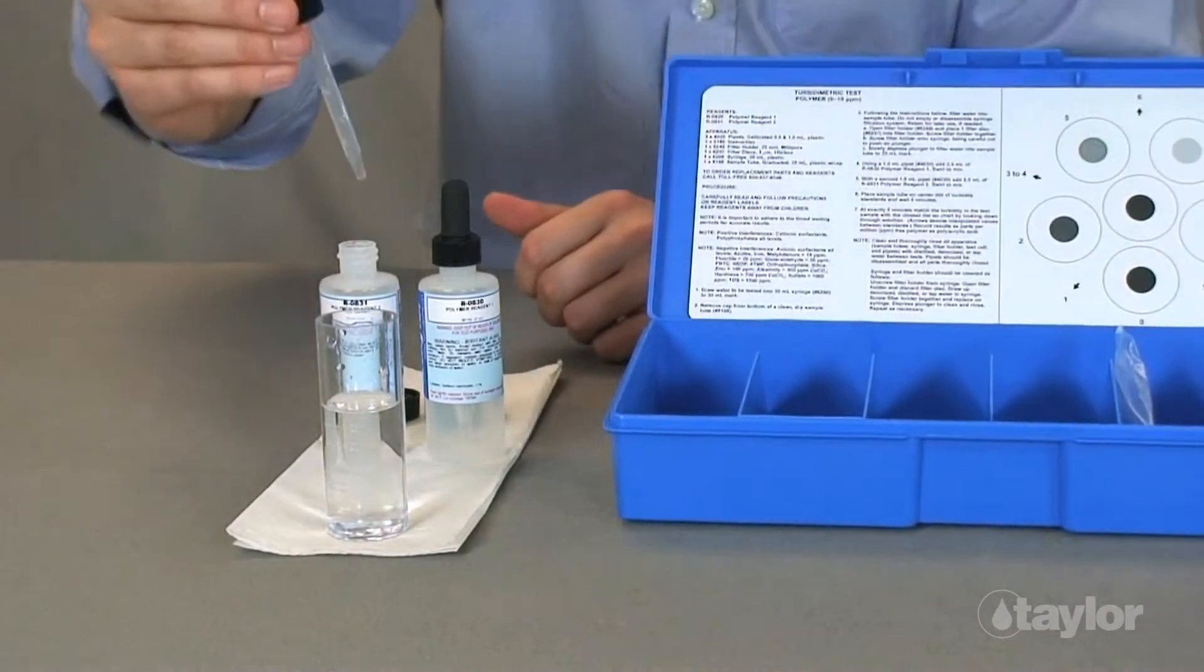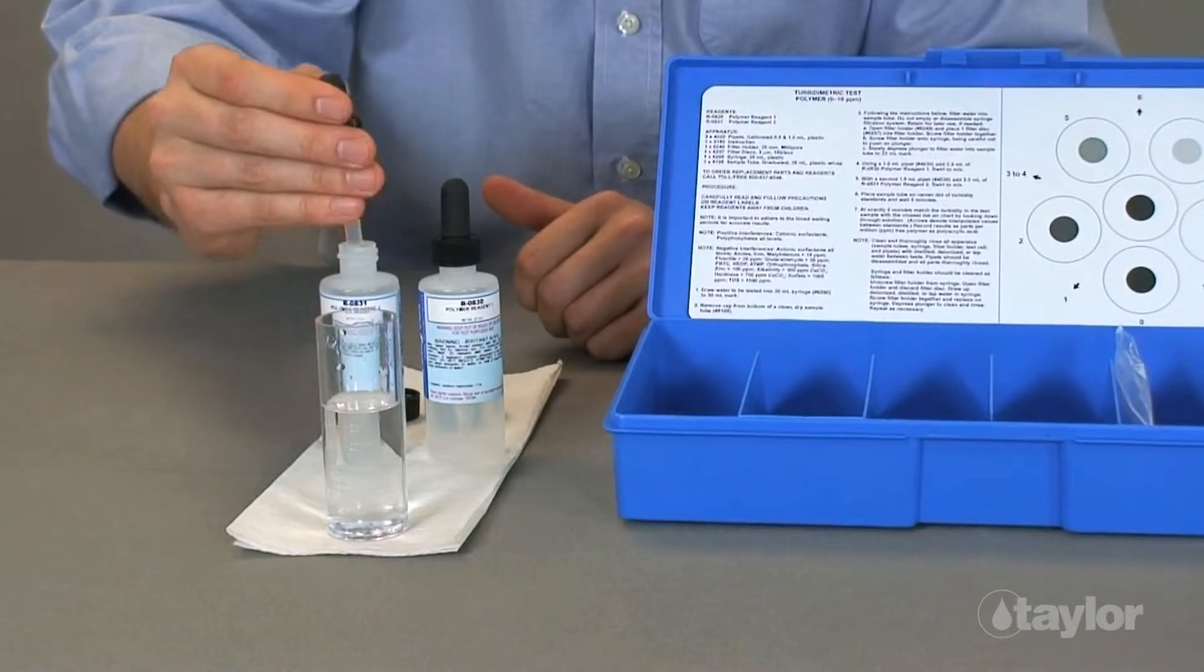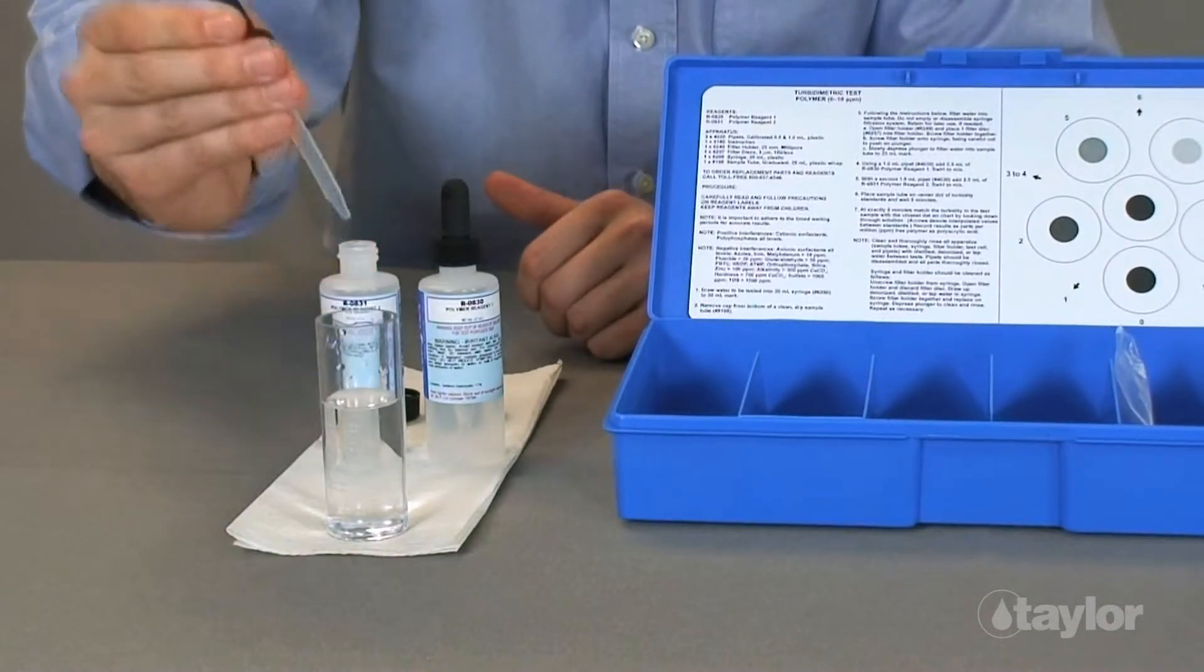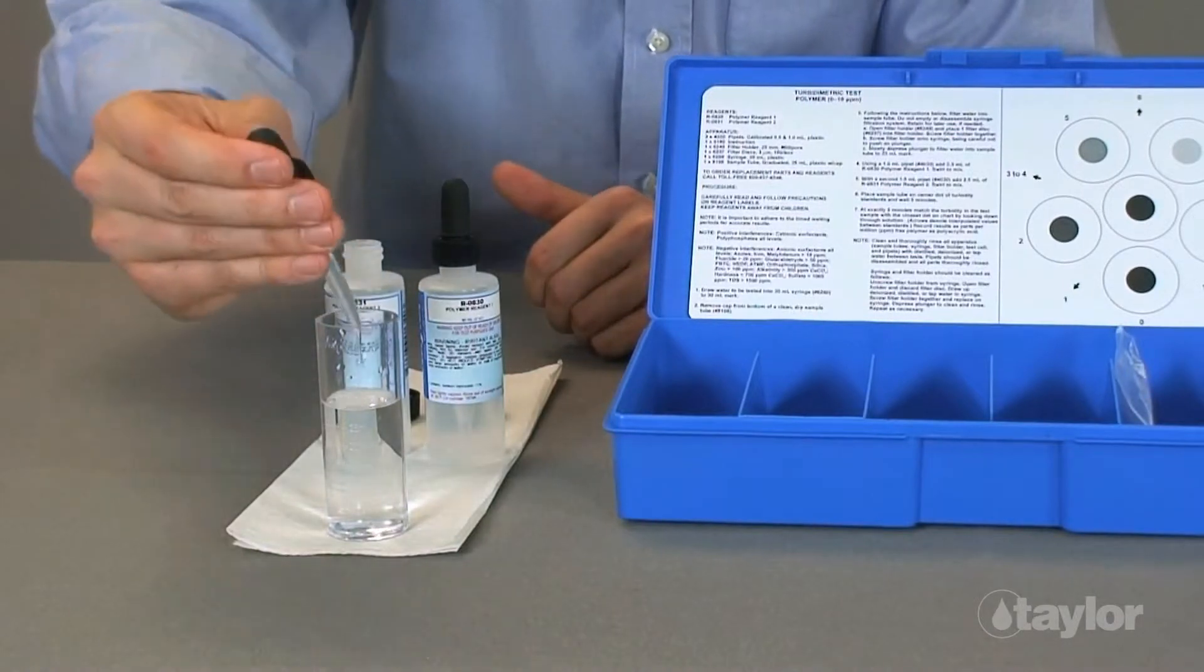With a second 1 milliliter pipette, add 2.5 milliliters of R0831 polymer agent. Swirl to mix well.